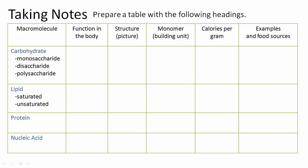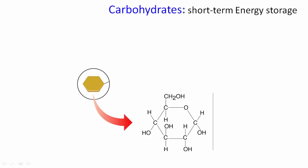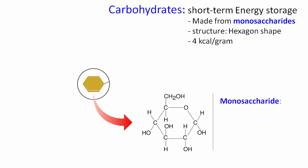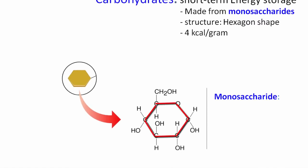Let's start with carbohydrates. Carbohydrates are used in the body for short-term energy storage, and they're usually shaped, or we think of them anyway, kind of as these regular hexagon shapes. They're made up of monosaccharides—that's the monomer. And the structure, again, is a hexagon shape, and they store about four kilocalories per gram.